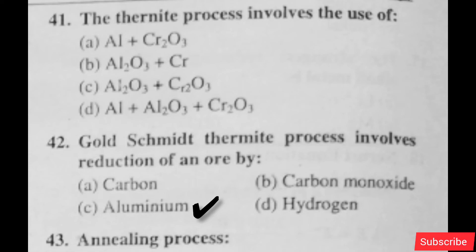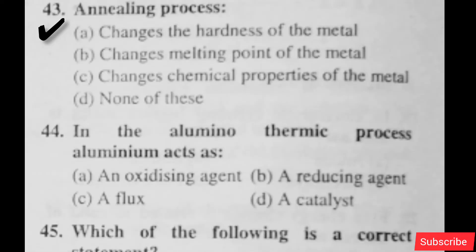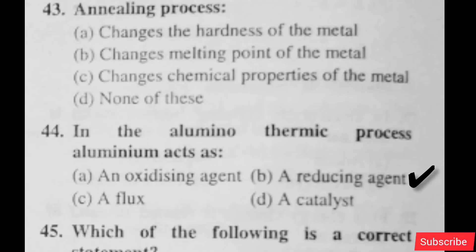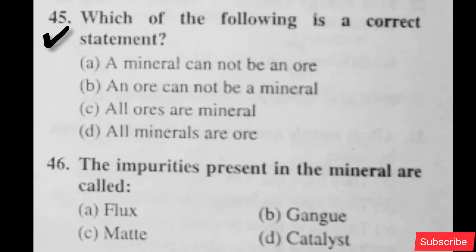The thermite process involves the use of — option A is right. Goldschmidt thermite process involves reduction of an ore by — option C is right. Annealing process — option A is right. In the aluminum thermic process, aluminium acts as reducing agent — option B is right. Which of the following is a correct statement — option D is right.